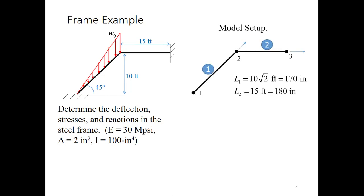First step here is to choose our model arrangement. This problem lends itself to two elements, one at an angle and one horizontal. I've identified those as well as choosing node numbering. I've calculated what the length of the two frame members will be in inches so that I can be consistent with my units and I've also chosen an orientation for the elements. Element 1 is going to have a positive angle of 45 degrees. Element 2 is simply going to have an angle to the global x-axis of 0.